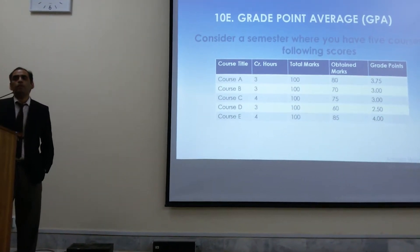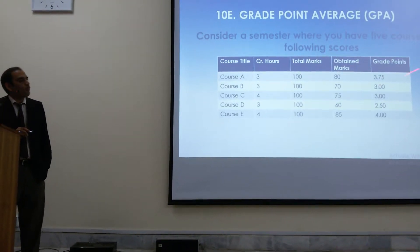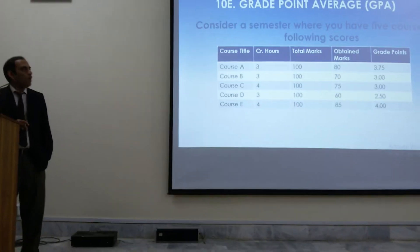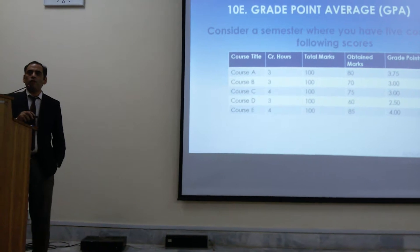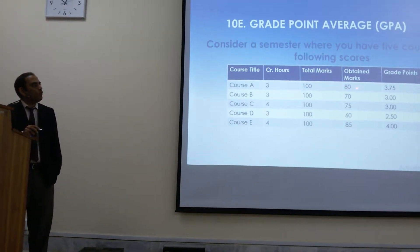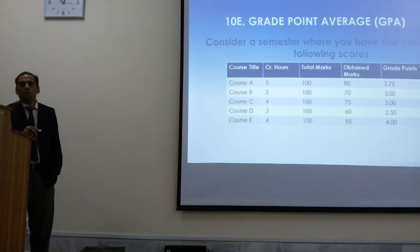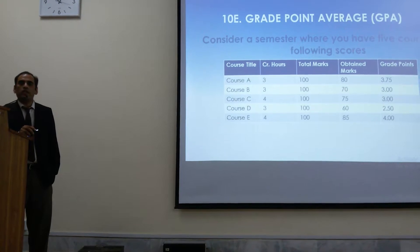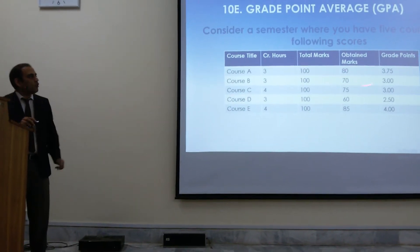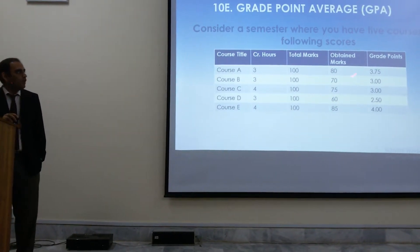There is a prescription that to every mark there is a related grade point. We call them grade points — that's why it's called grade point average. This table is available, and it changes with every mark. For example, 80 has a certain grade point, 81 has 3.76, and 82 has a higher value. So it changes with every single mark you have, not just with a grade.